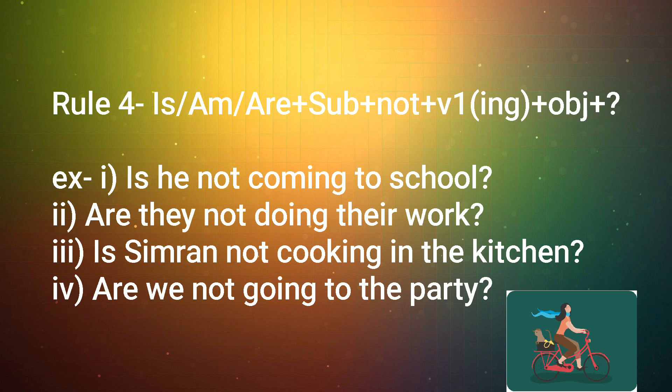If you want to use WH-words like why, where, when, then these words will come first. After that, we use is/am/are, and we will follow the same rule according to rule number four. For example: What are you doing? In this way, you can easily understand how to make sentences with the help of is/am/are or any WH-word.